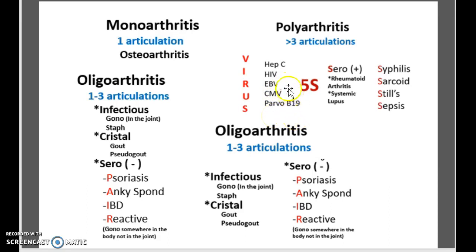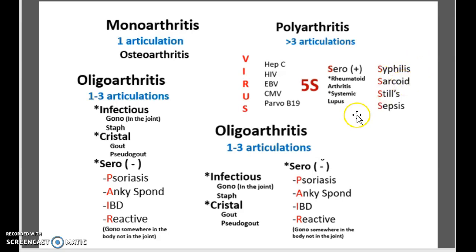The five S's — which are five diseases — are seropositive, syphilis, sarcoid, Still's, and sepsis. Those are the five S's when it comes to polyarthritis.